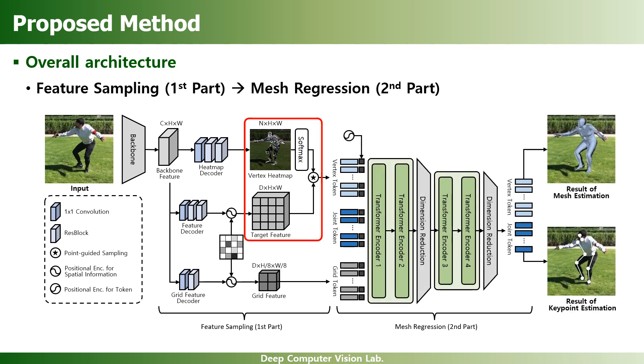In the mesh regression part, input tokens are transformed to the final 3D coordinates corresponding to the output mesh through the transformer encoder blocks. Our progressive attention masking strategy is applied to the transformer encoder, and it will also be dealt with in a later slide.